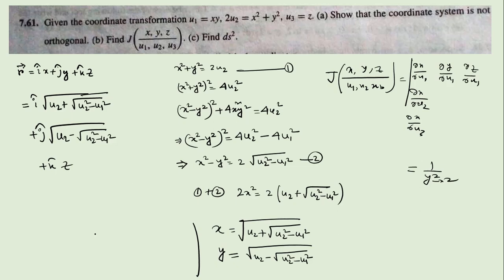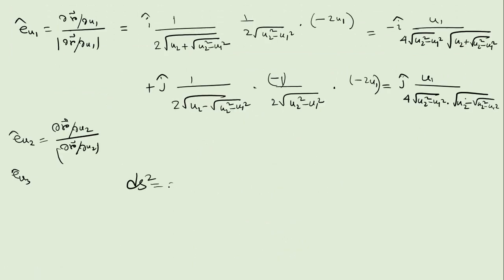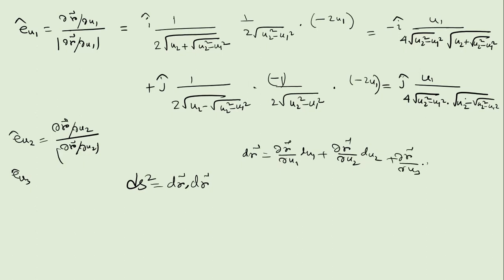To find the line element ds², recall that ds² = dr · dr, where dr = (∂r/∂u1) du1 + (∂r/∂u2) du2 + (∂r/∂u3) du3. This is a very lengthy process as well — do it yourself.